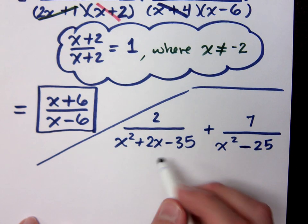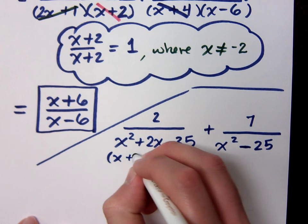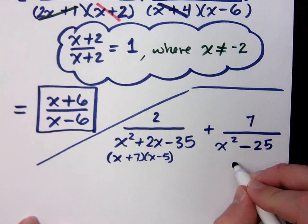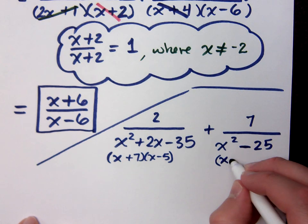So how does this guy factor? x plus 7, x minus 5. x plus 7, x minus 5. What about this guy? x plus 5, x minus 5.